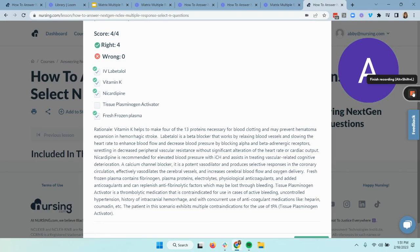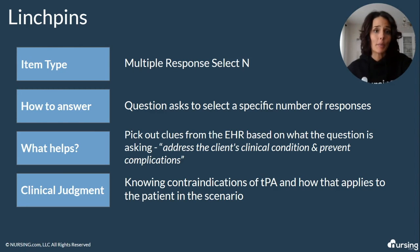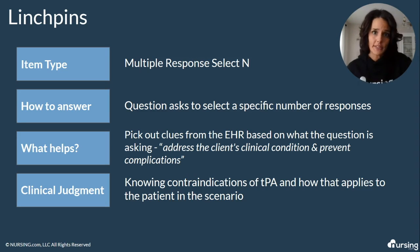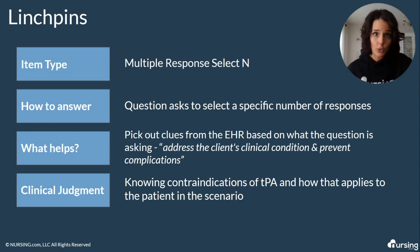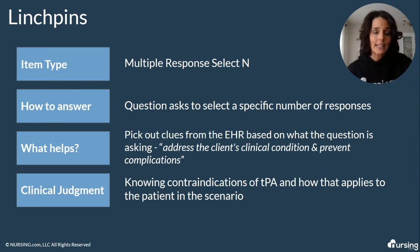Let's do a recap. On this item type — multiple response select N — you're going to answer this question much like you would a select all that apply question. You can cover the multiple responses and evaluate one at a time, turning each into a true or false statement. You'll know how many to pick because the question specifies the number — like our question said 'select four medications.' Utilize the EHR; the patient data there is really helpful. In this situation, we showed clinical judgment by identifying that TPA was contraindicated for this patient. We also saw that nicardipine and IV labetalol were indicated for the patient's high blood pressure and high heart rate, and that vitamin K and fresh frozen plasma will help with clotting so the hemorrhage doesn't get worse.